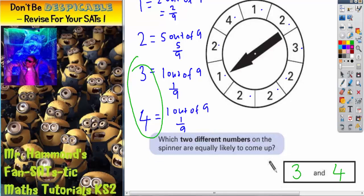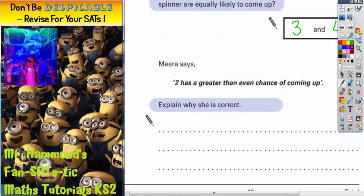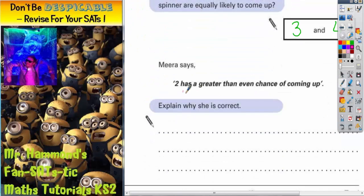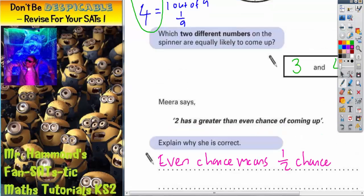For the second part of the question, it says, Meera says that 2 has a greater than even chance of coming up. Explain why she is correct. Well, even chance means half chance.